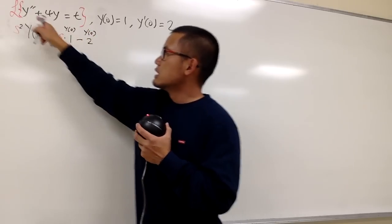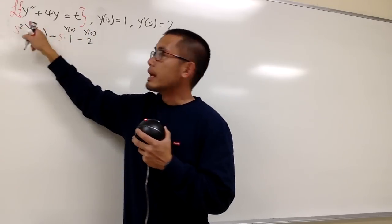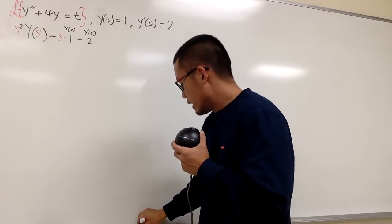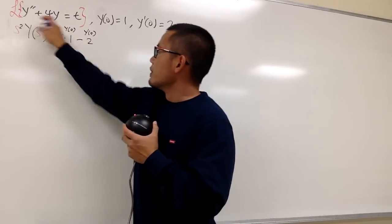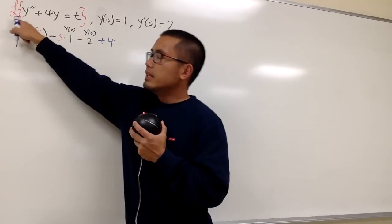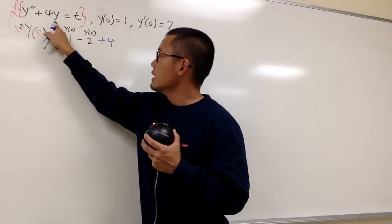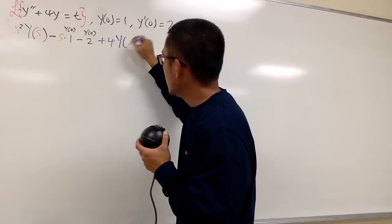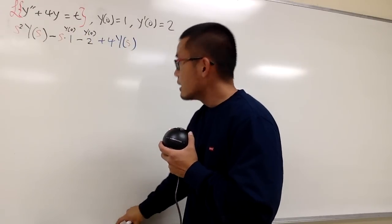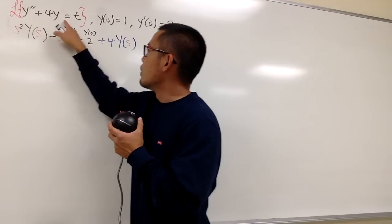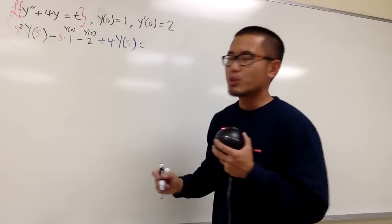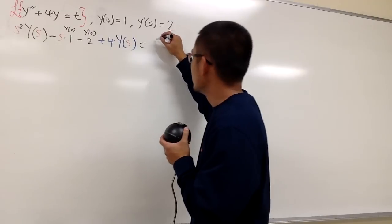And this right here is for the y double prime term. Then we have plus 4y, and you have to do a Laplace for that as well. For this we will just get plus 4, and the Laplace transform of y is just capital Y(s). And then we will have to do the Laplace transform of t, which is going to give us 1 over s squared.